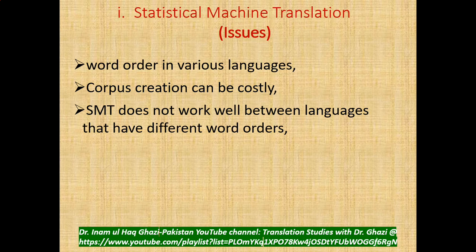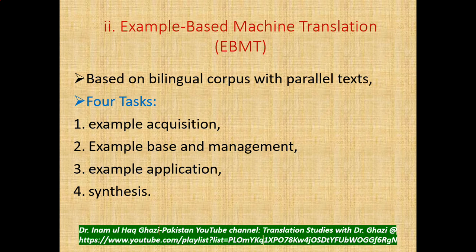Example-based machine translation shares the most similar element with statistical machine translation: it is also based on bilingual corpus with parallel text. There are four tasks in EBMT: example acquisition, example base and management, example application, and synthesis. The key concept here is analogy — finding a good example of how a sentence structured with certain words should be completed.